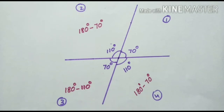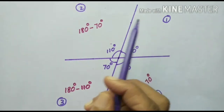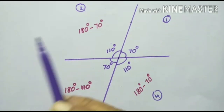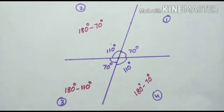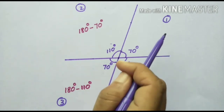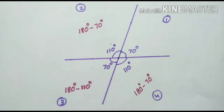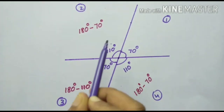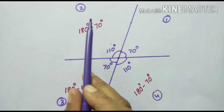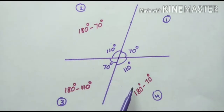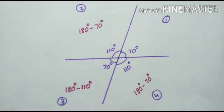When two lines intersect each other, the adjacent angles give 180 degrees. The sum of angle 1 and angle 2 is 180 degrees. The sum of angle 2 and angle 3 is 180 degrees. The sum of angle 3 and angle 4 is 180 degrees. Similarly, opposite angles are also equal: angle 2 equals angle 4, and angle 3 equals angle 1.